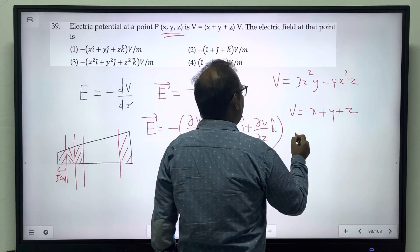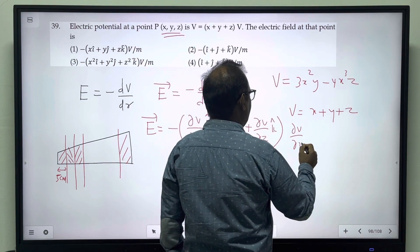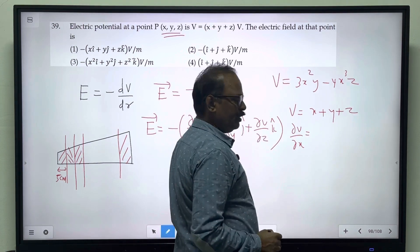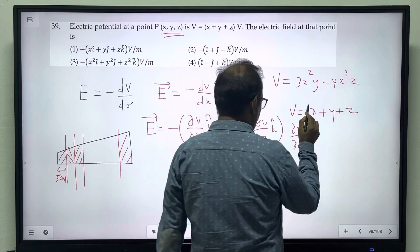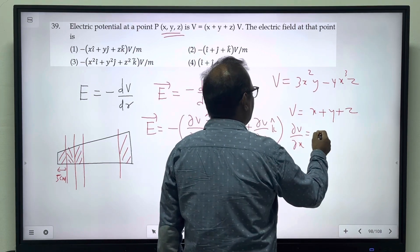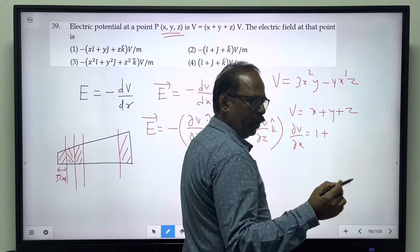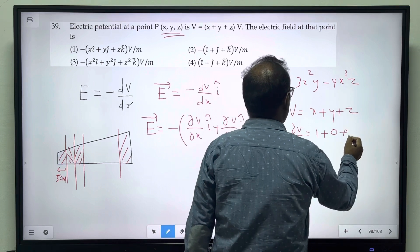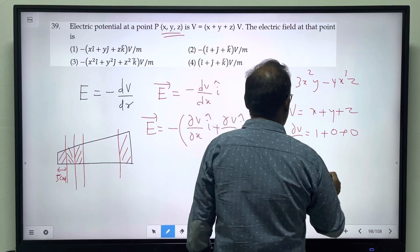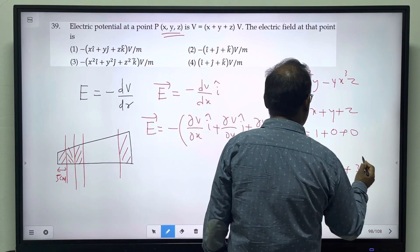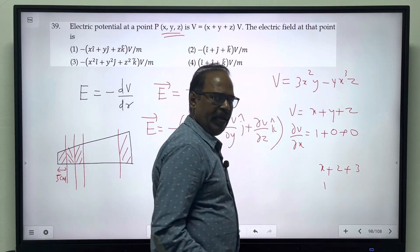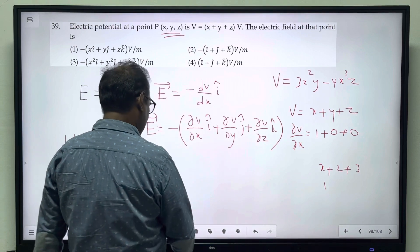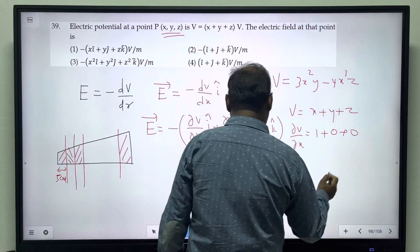∂V/∂x: differentiate this expression partially with respect to x. x is a variable, so differentiating gives 1. y is a constant, z is a constant. When we differentiate, x is the variable, giving us 1, while the other terms are 0.